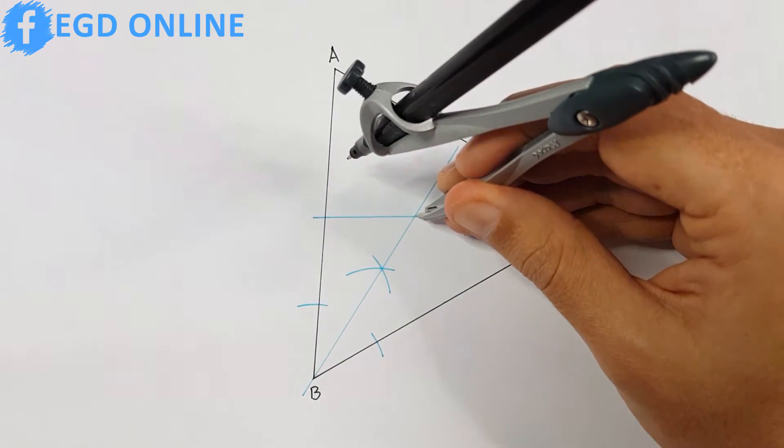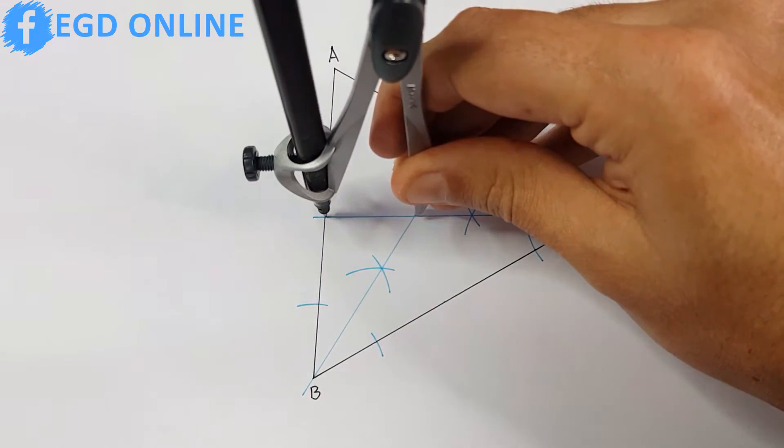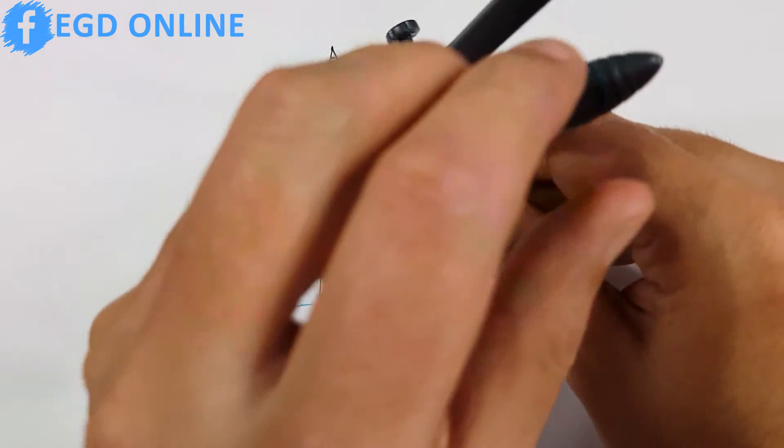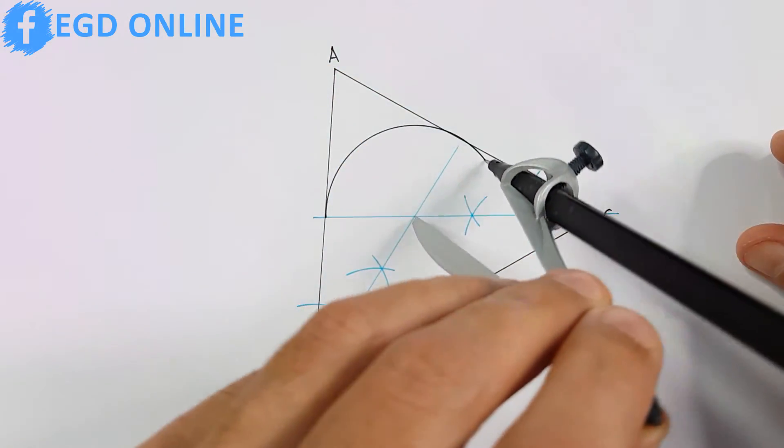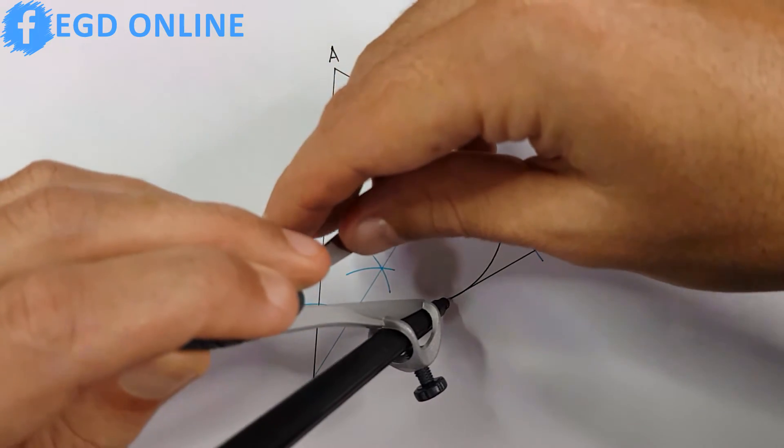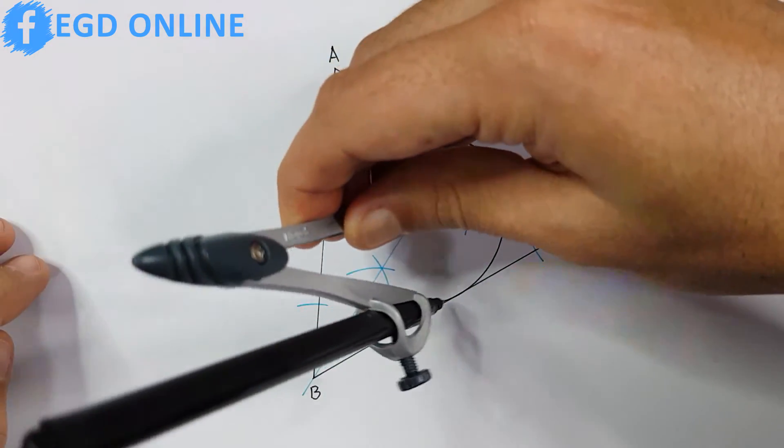Take your compass and place it on the intersection point and adjust your compass to one of the sides of your triangle. Then you can draw your circle that will touch all three sides of your given triangle.